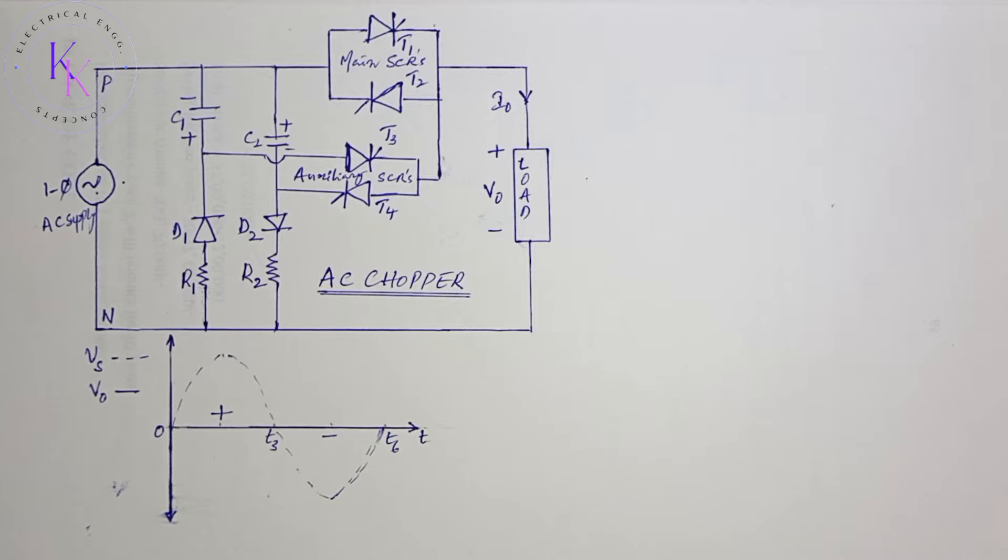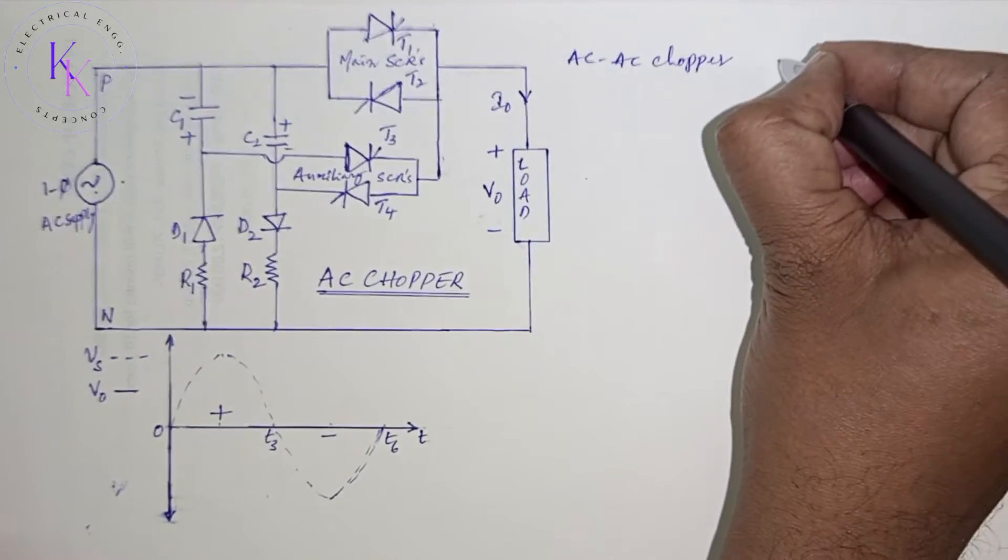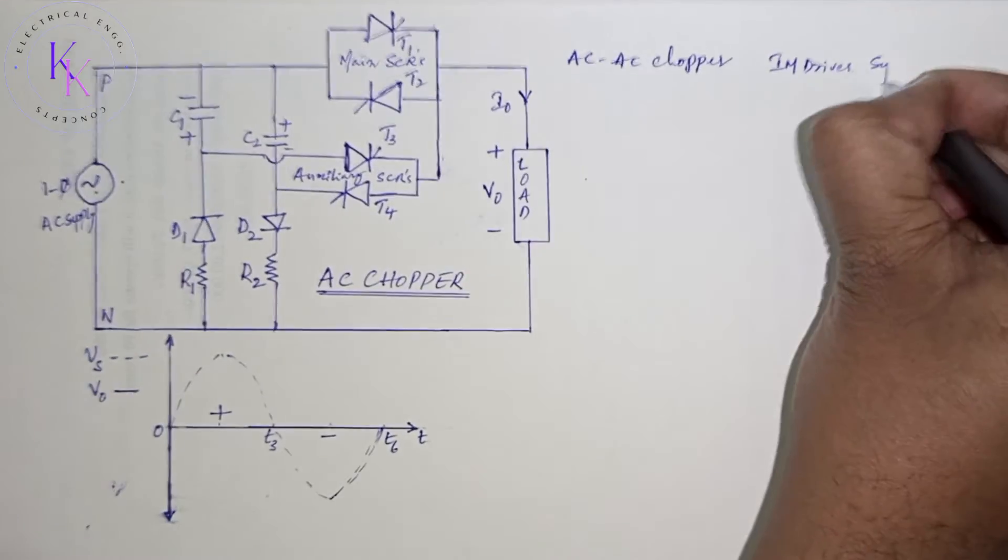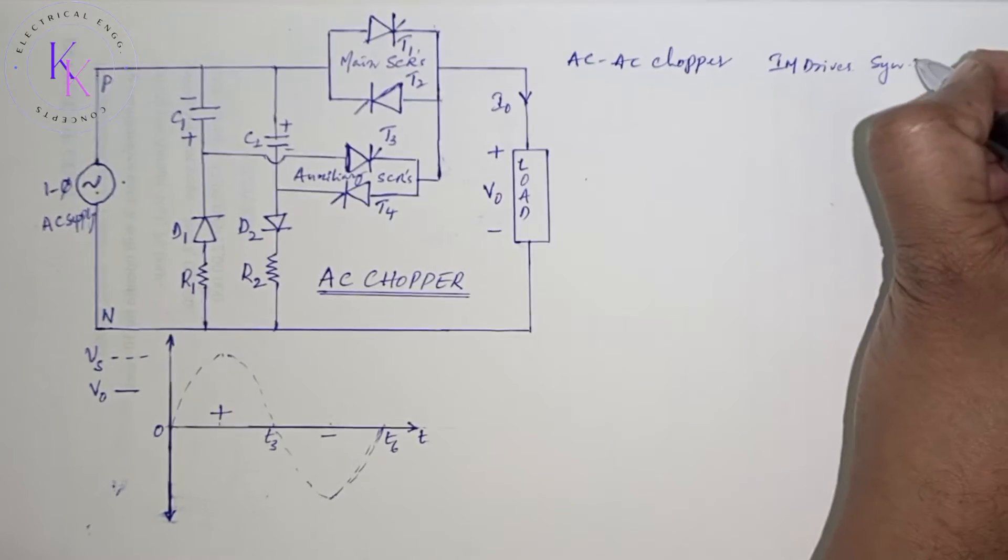It is a static switch that uses semiconductor devices for the variation of AC voltage. This is also known as AC to AC chopper, which is used in induction motor drives as well as synchronous single-phase motors.